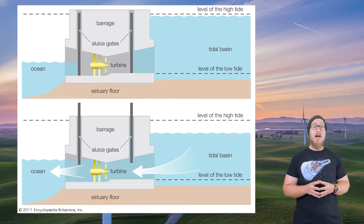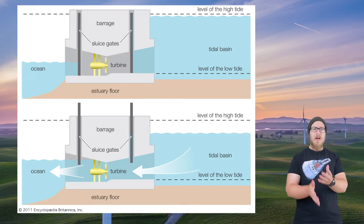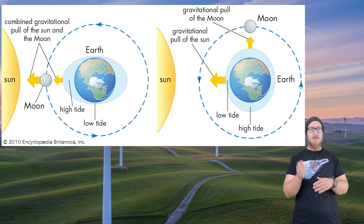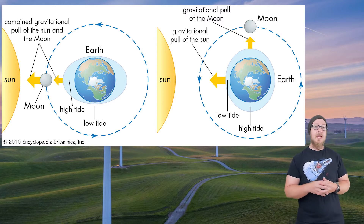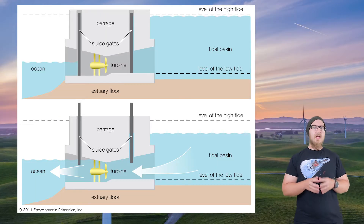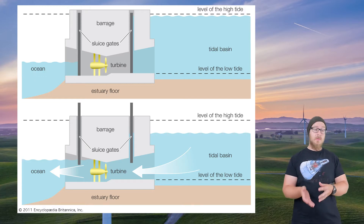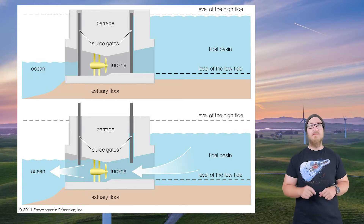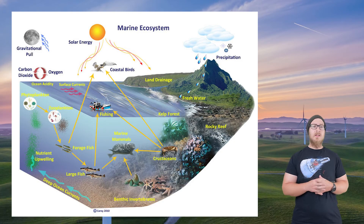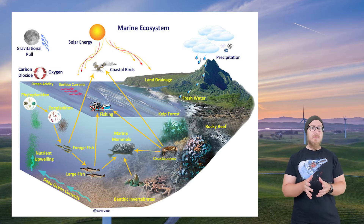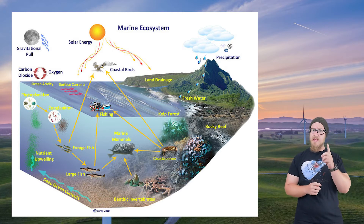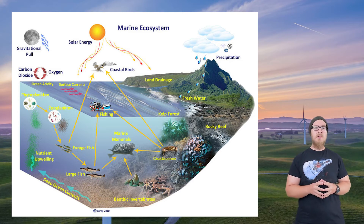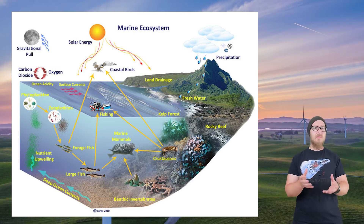Another way to produce hydroelectric power is through utilizing the tides — the rise and fall of sea levels caused by the combined gravitational forces of the Moon and the Sun on the Earth, and the rotation of the Earth. As the waters proceed and recede, the flow through the tidal power mechanism spins a turbine, producing electricity. Tidal facilities are along coastlines, and building them reduces the range of coastal ecosystems, which support 90% of all marine species. However, there aren't yet enough tidal facilities to make a large impact.